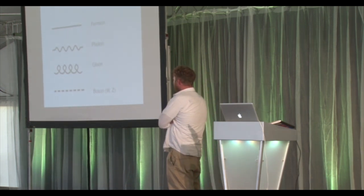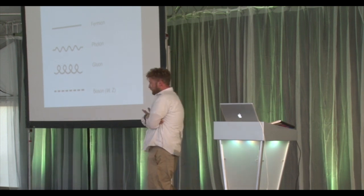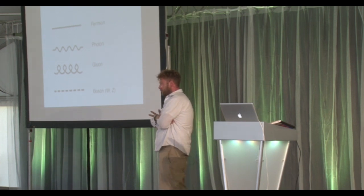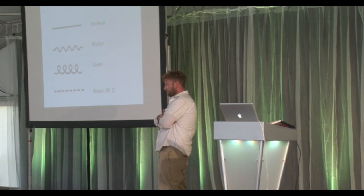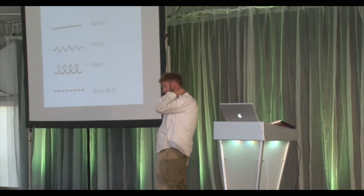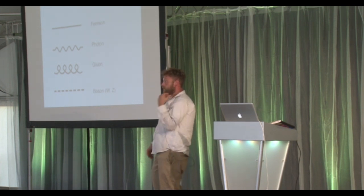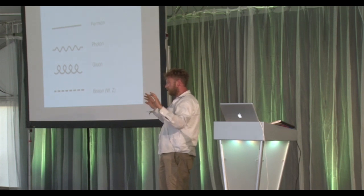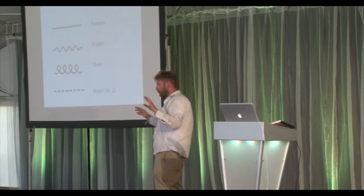Fermions and bosons are a good example of subatomic particles. There's a major difference between them: bosons are social, whereas fermions are anti-social. If you take an equation to predict where their position is, bosons would have two functions next to each other with a plus sign, where you can flip X-1 and X-2 without a problem.